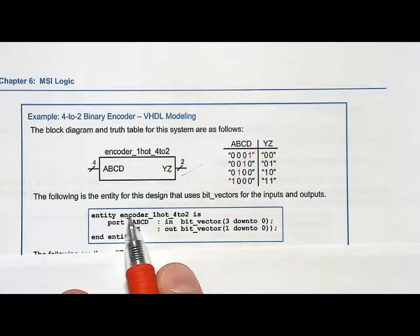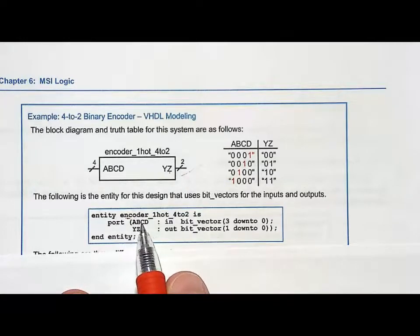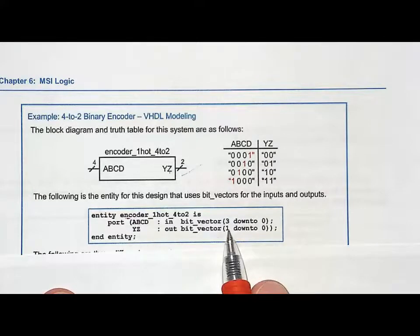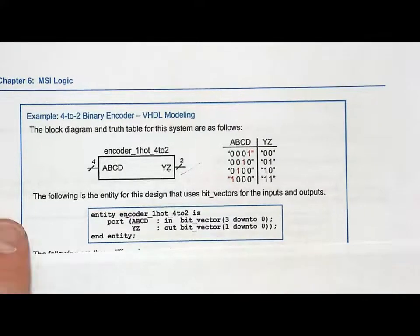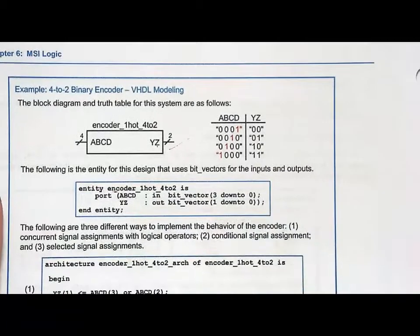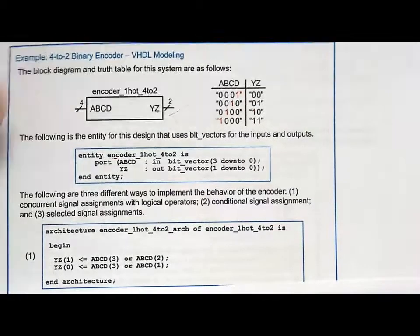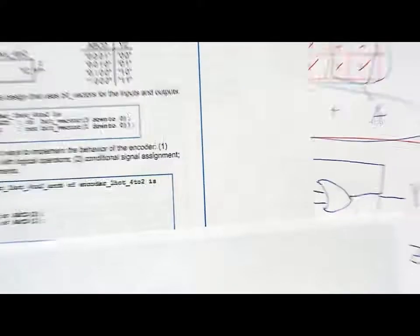So now here's our entity. Let's call it encoder one-hot four-to-two. We have one input, ABCD—notice that's a vector, and it's three down to zero, so it's four bits wide. And then you have Y and Z, and it's one down to zero, so it's a two-bit vector. We can simply implement our classical circuit by just putting in here the circuit that we found.